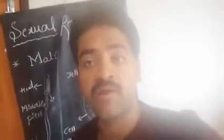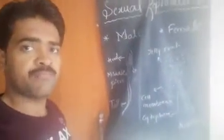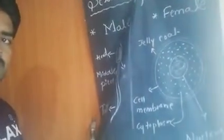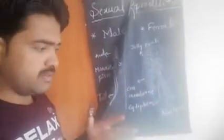Hi students. In yesterday's class we have seen what is male and what is female, and what are the sex cells of male and female bodies. Regarding the sperm as well as the egg, we have seen these two structures in detail. The sperm is the male gamete and the egg is the female gamete. These are also called germ cells, and by the combination of these two, fertilization is going to take place.